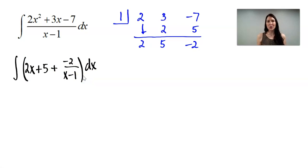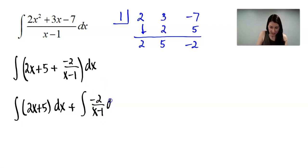Now I'm going to split up this integral because I see I have a 2x plus 5 and then this other fraction of negative 2 over x minus 1. So I'm going to rewrite this integral as 2x plus 5 dx and then separate this other one negative 2 over x minus 1 dx.